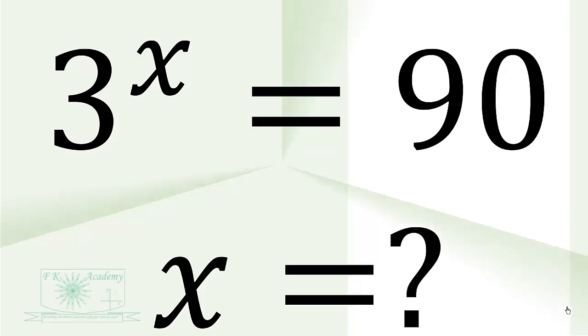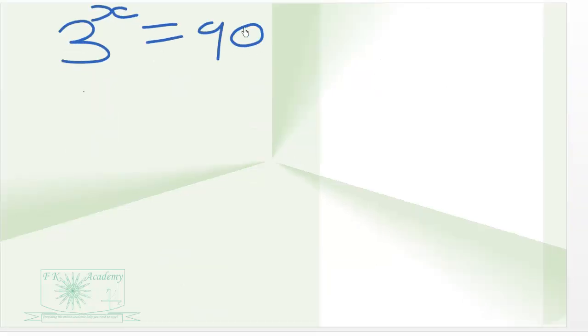The equation is 3 exponent x is equal to 90. What is the value of x? Since we cannot express 90 to base 3 to a certain integral exponent, what we can do is take the logarithm of both sides.